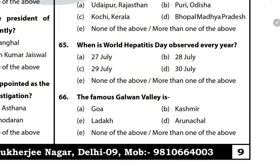Question 65: When is World Hepatitis Day observed every year? The answer is B — 28th July. The 28th of July is the birth date of Nobel laureate Baruch Blumberg, who discovered the hepatitis virus.